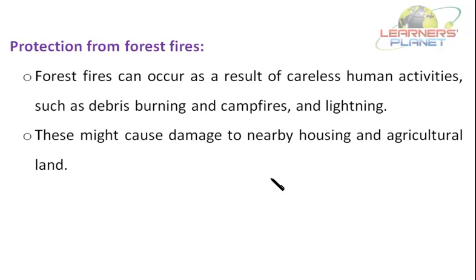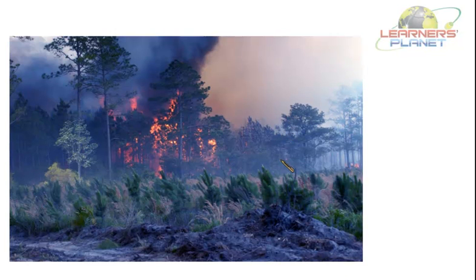Protection from forest fires should also be there. Forest fires can occur as a result of careless human activities such as debris burning and campfires and lightning, and these might cause damage to nearby housing and agricultural land. Forest fires are basically considered beneficial for plants, but they might have devastating effects on animal life and people living nearby. Forest fires can be prevented by being careful in burning debris, and fire retardants and water bombs are also used to prevent forest fires.